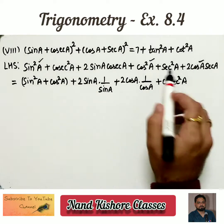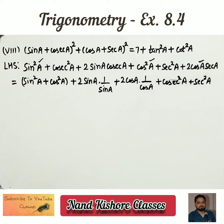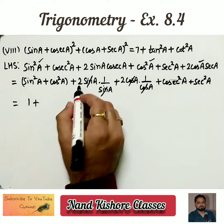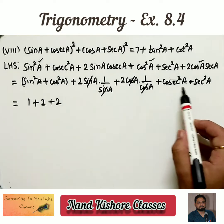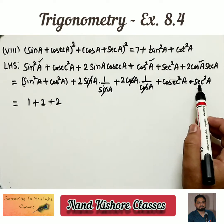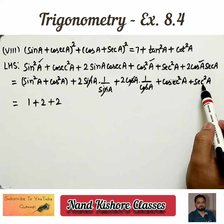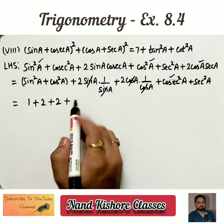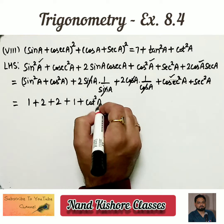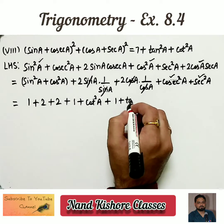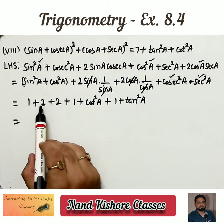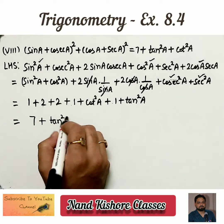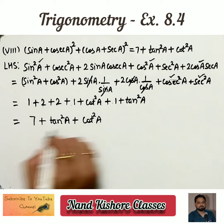So writing cosecant square a and then secant square a. Sin square a plus cos square a equals 1, giving 1. Then 2 and 2. Now using formulas: 1 plus cotangent square a equals cosecant square a, and 1 plus tangent square a equals secant square a. Adding all: 2 plus 2 is 4, and there are three 1s making 3, so total is 7, plus tangent square a plus cotangent square a — this is the right side.